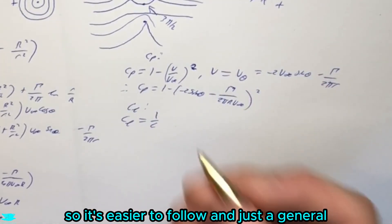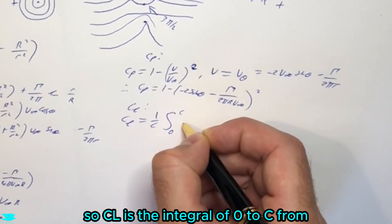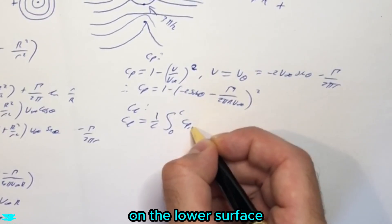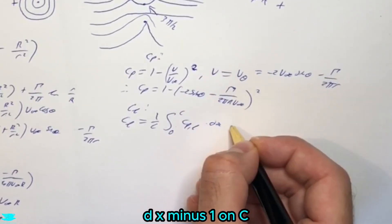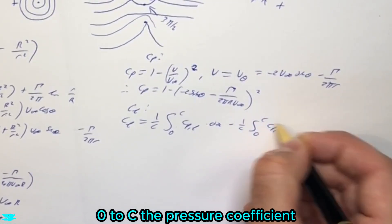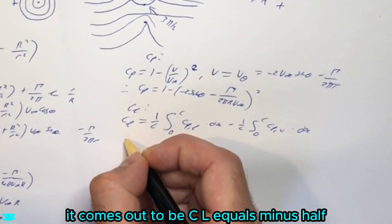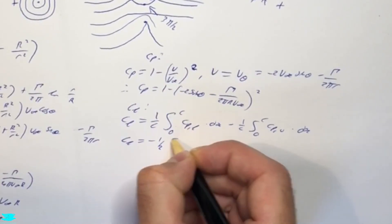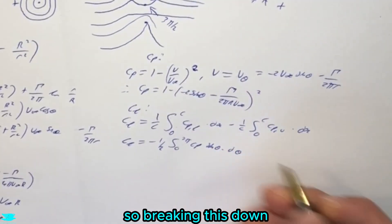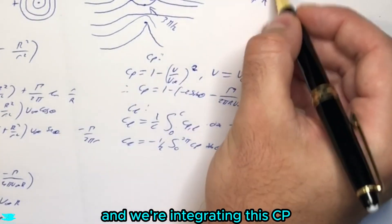So we can effectively break this into half. It doesn't really matter too much, but I'm just breaking this down into a few more steps, so it's easier to follow, and just a general information kind of thing. So CL is the integral of 0 to C, from, so the bottom half, 0 to C, of the pressure on the lower surface, the pressure coefficient, dot dx, minus 1 on C, 0 to C, the pressure coefficient on the upper surface, dot dx. Now, putting this all into the wash, it comes out to be, CL equals minus half, integral from 0 to 2 pi, CP, sine theta, dot d theta. So we're breaking this down, so that the sine theta takes into account the direction effectively, and we're integrating this CP around the cylinder.